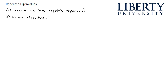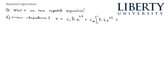We're going to fix this by changing our solution form in the case of repeated eigenvectors. x equals c1 times eigenvector k times e to the lambda t — that part's still the same — plus c2 times the eigenvector times t e to the lambda t. That looks familiar to how we got independence when we weren't dealing with systems, but the difference is we're also going to add another vector p times e to the lambda t.